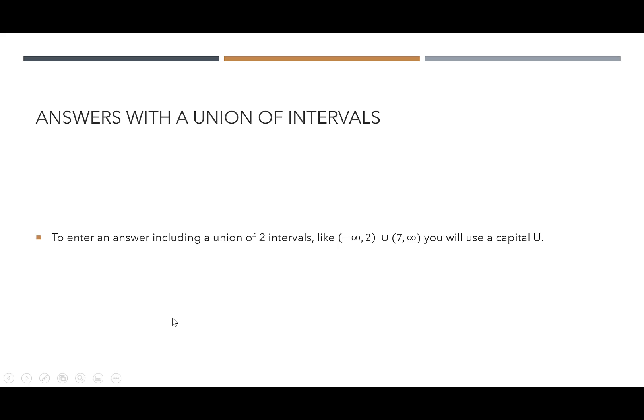Another thing we want to watch for are answers that have a union of intervals. So to enter an answer including a union of two intervals, like negative 2 to infinity union 7 to infinity, you're going to want to use a capital letter U to represent the union sign.